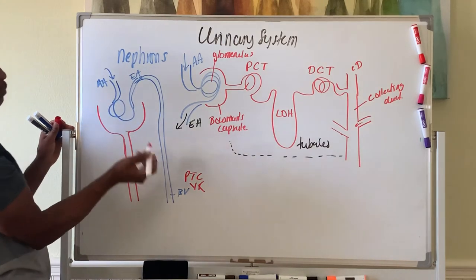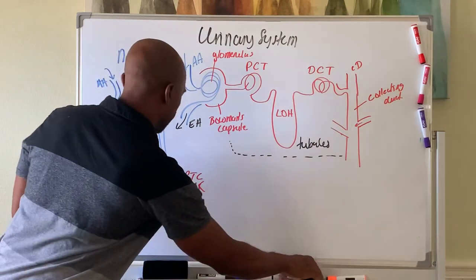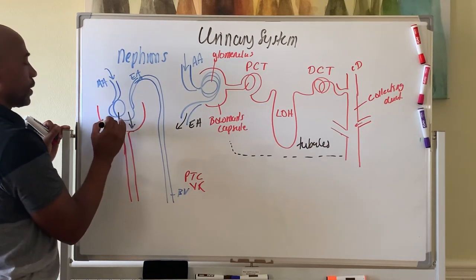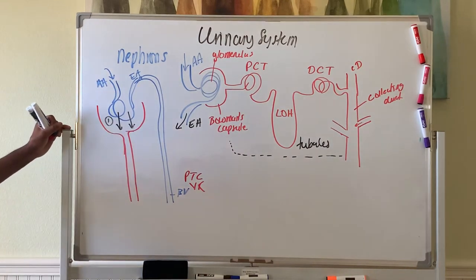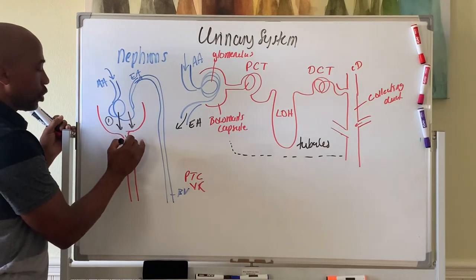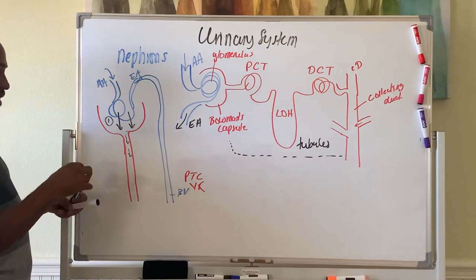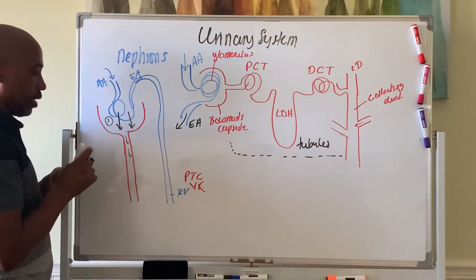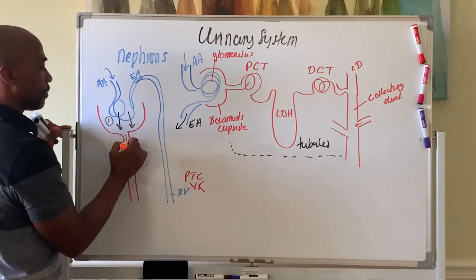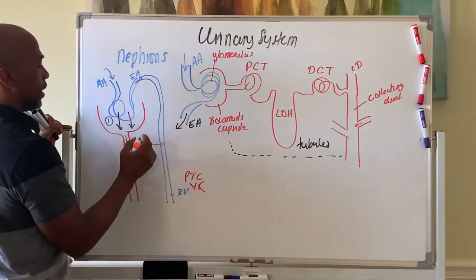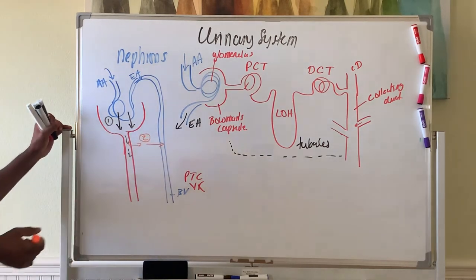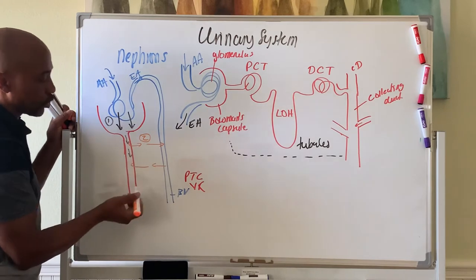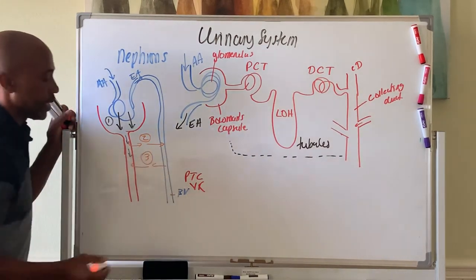So the first process that takes place is that your glomerulus will push things out into the Bowman's capsule. That process is called filtration. Then once the filtrate gets into your tubules, almost 99% of it is pushed back into the blood. So it's reabsorbed back into the blood. That's process two. We call that reabsorption. But the blood vessel will also send things back into the tubules. That's called secretion.